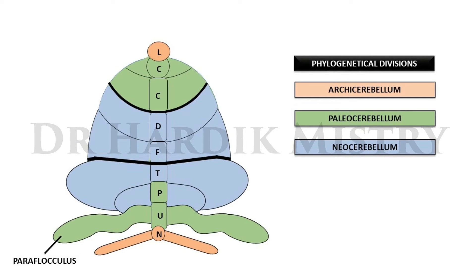Phylogenetically, the cerebellum is divided into three parts. The archicerebellum is the oldest part, consisting of the lingula and flocculonodular lobe. The paleocerebellum is the next to appear, consisting of the entire anterior lobe except lingula, plus pyramids, uvula, and paraflocculus of the posterior lobe. The neocerebellum is the latest to develop and consists of the full posterior lobe except pyramids, uvula, and paraflocculus.